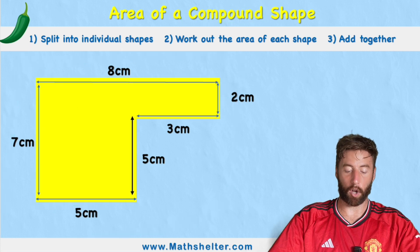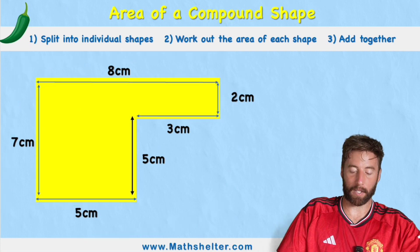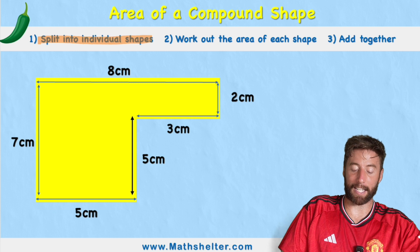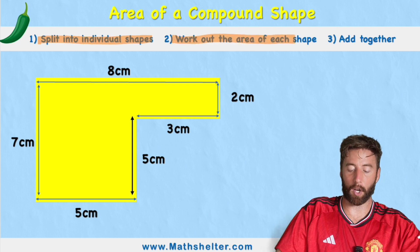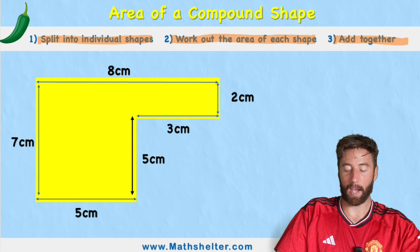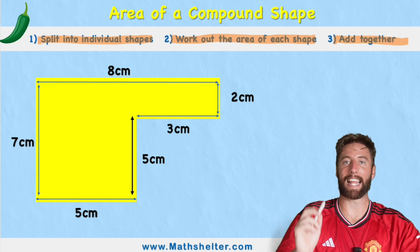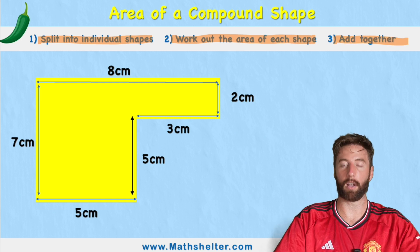So when we're measuring the area of a compound shape, we need to follow these steps. First, split into the individual shapes that it started with. Then we're going to work out the area of each shape, and then we're going to add that together to get the area of the total of our compound shape.